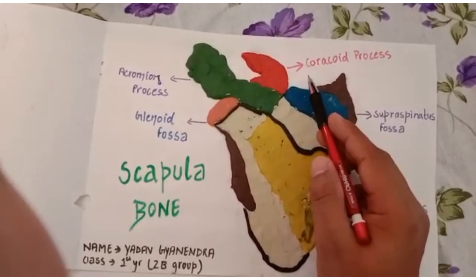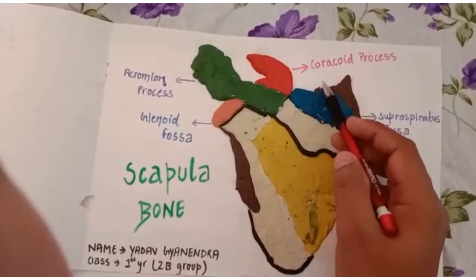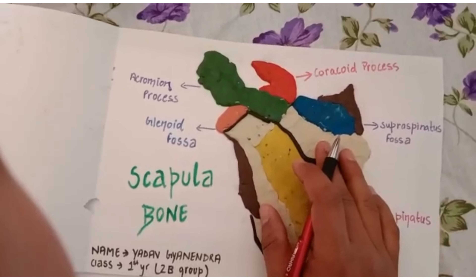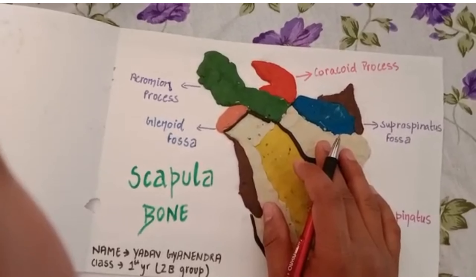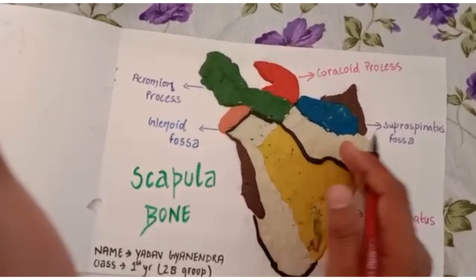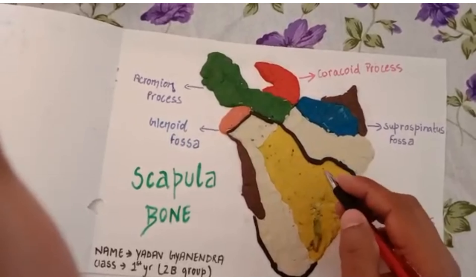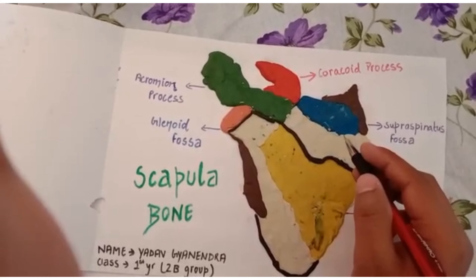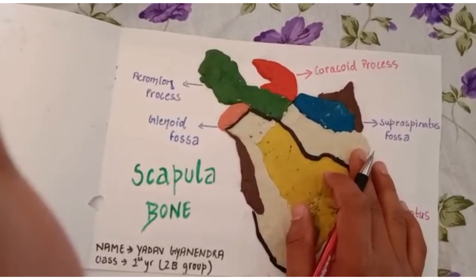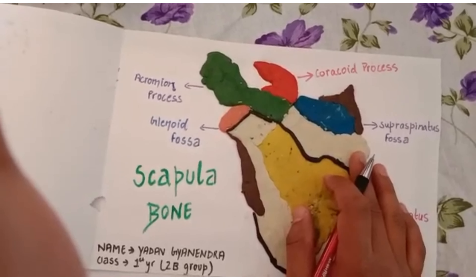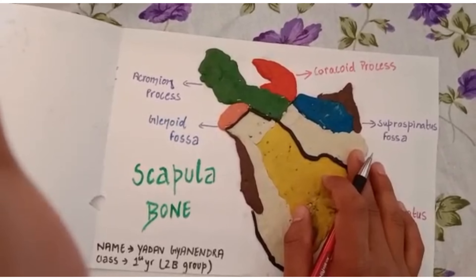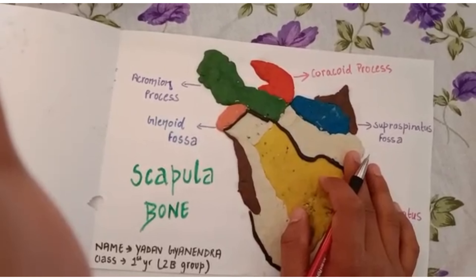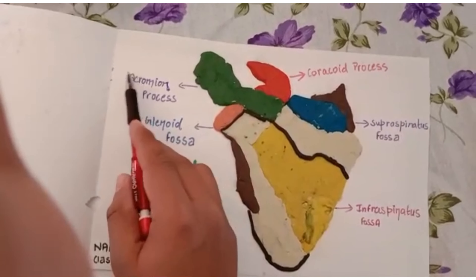The coracoid process is named because it grows beak-like in structure. It gives attachment to three ligaments: the first is the coracoclavicular ligament, the second is the coracoacromial ligament, and the third is the coracohumeral ligament. It also gives origin to the short head of biceps brachii and pectoralis minor, and attachment to the coracobrachialis.